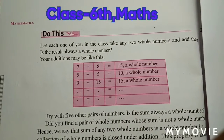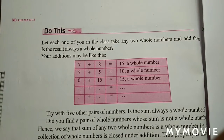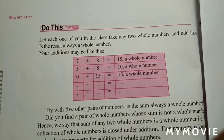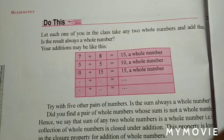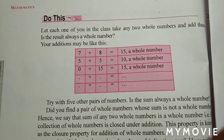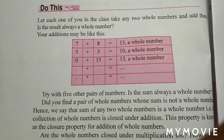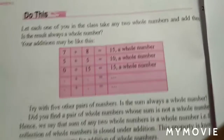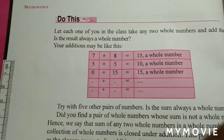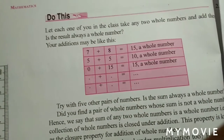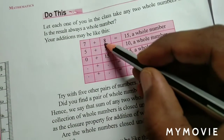Students of sixth class, now we are discussing about chapter 2.2 and the properties of whole numbers. Let's start from page number 32 of your textbook. For example, seven is a whole number and eight is also a whole number.